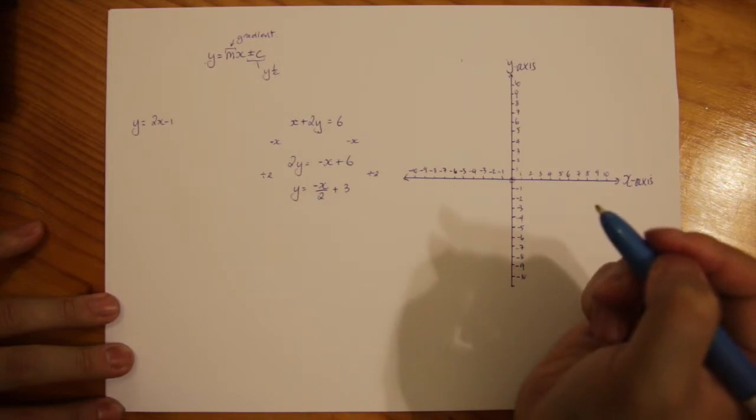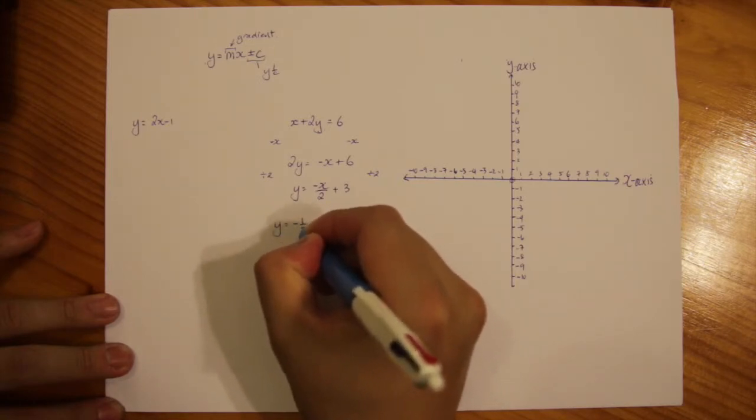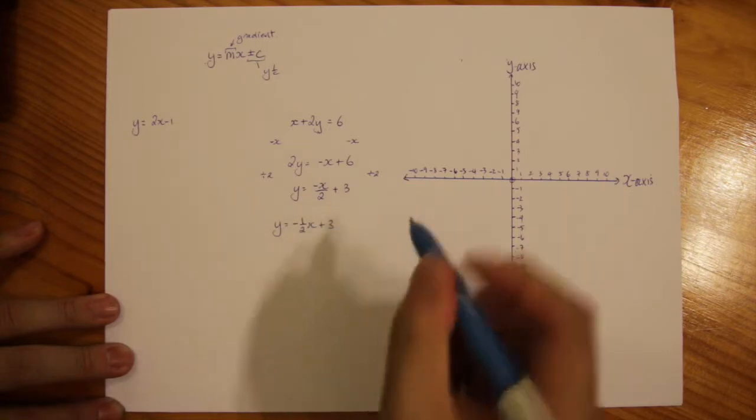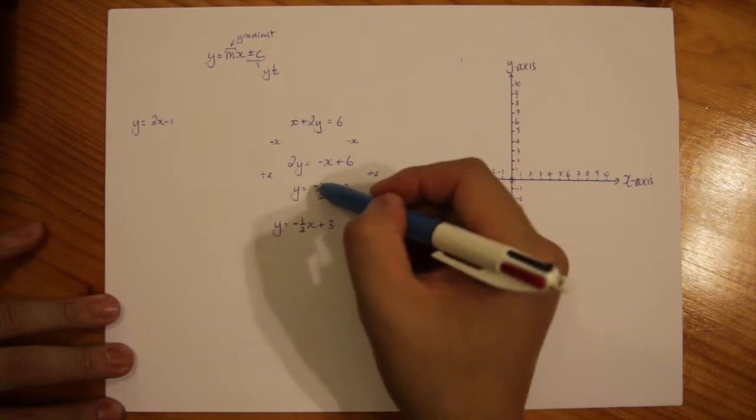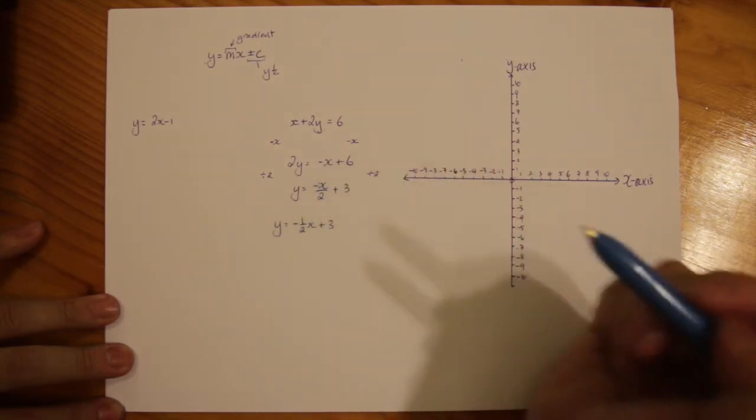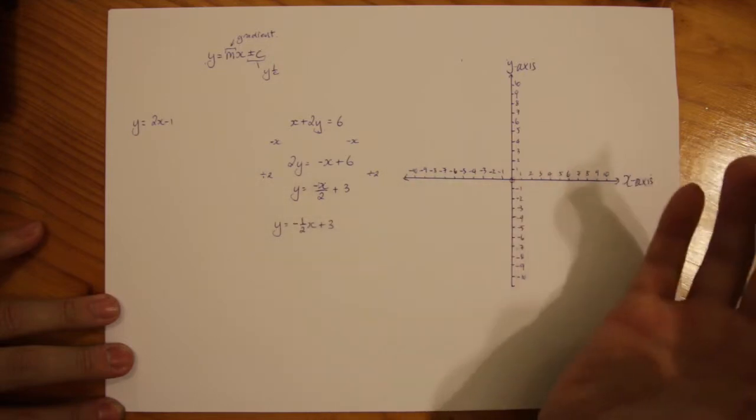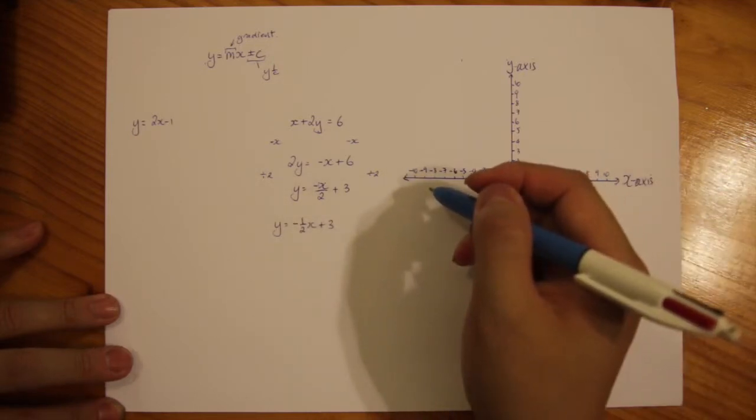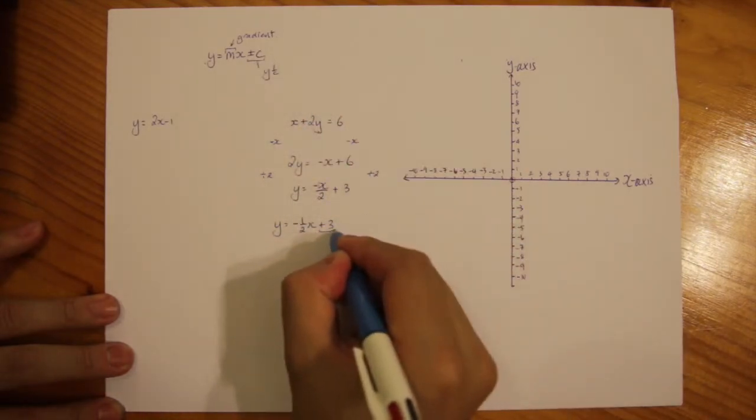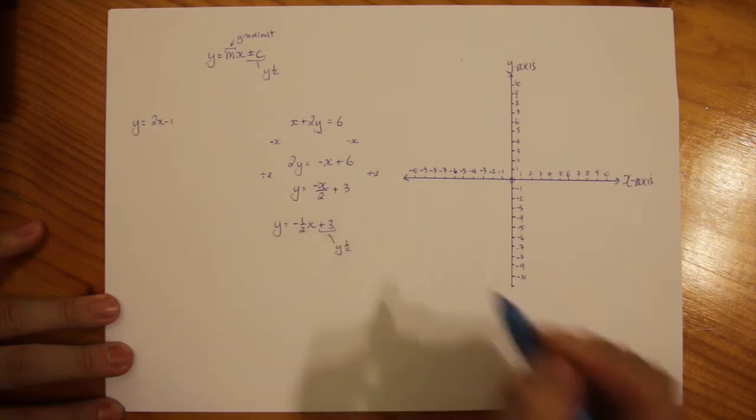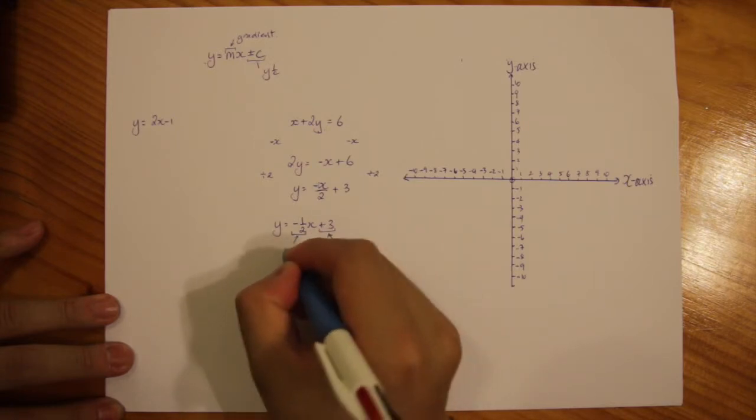I can rewrite this equation as y equals negative half times x plus 3. That's essentially what it is. So if you ever get confused with that, it's just a half because there would be a 1 over there. So I'm just going to bring it to the front to represent it a little bit easier for you to understand. The y-intercept is going to be 3, here's my y-intercept and then negative half is my gradient.